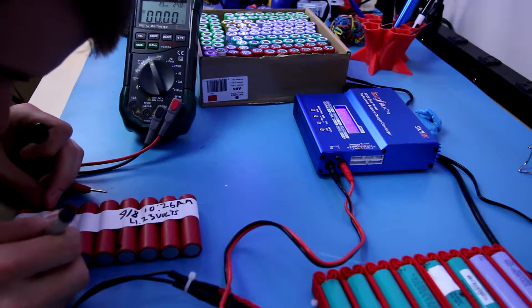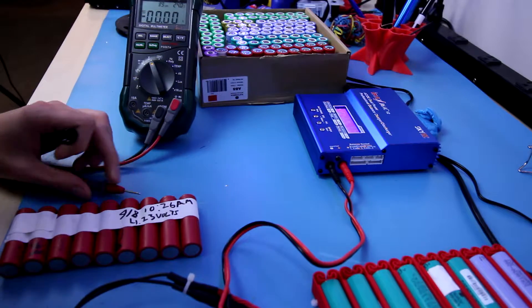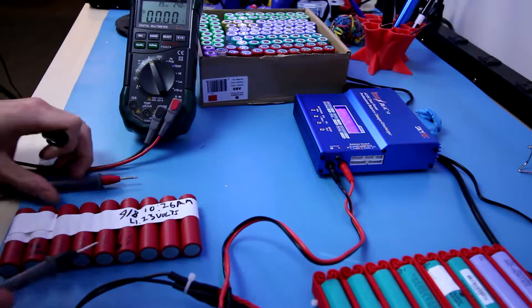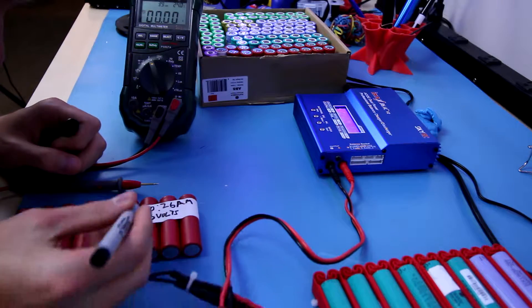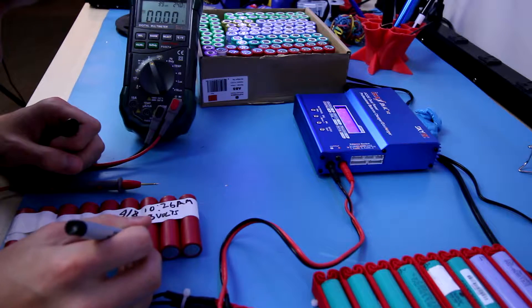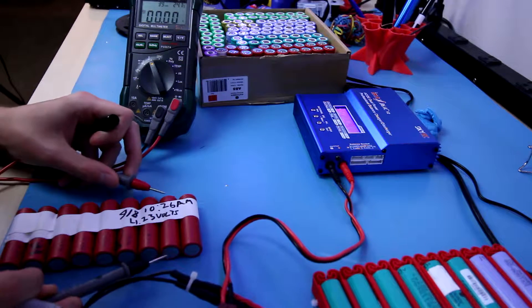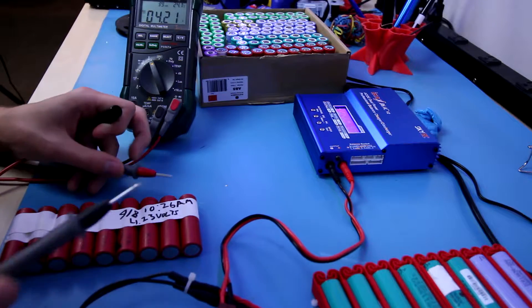4.16, 4.21, 4.20. Basically any of these batteries that drop below 4 volts then I have to go ahead and chuck them. But these all are really solid, sitting around 4.2. Lowest I have is 4.15 which overall is pretty solid there.